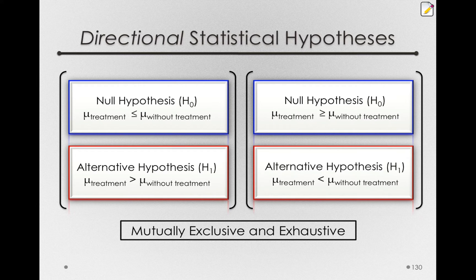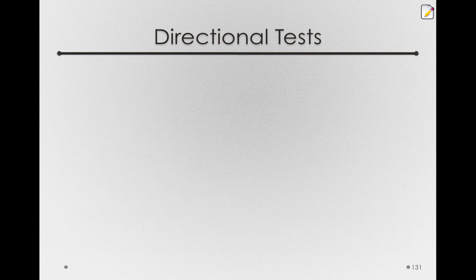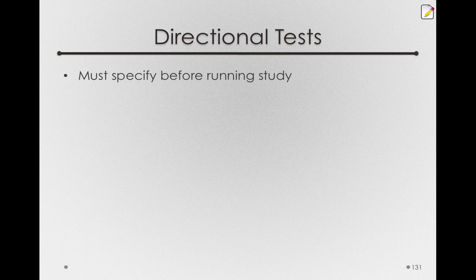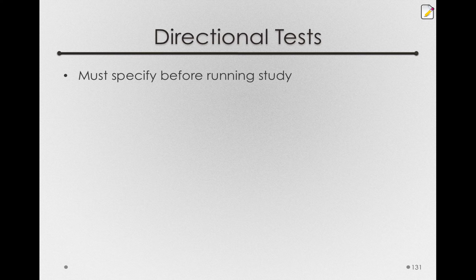Now, you might think, given that we can increase our power without increasing our false alarm rate, that we should always use a directional hypothesis. There are some very good reasons not to use a directional statistical hypothesis — one of them is a fairly statistical point, and the other is a fairly pragmatic point. The first characteristic is that you have to specify them before running a study. This is in part to be ethical, and in part to keep us from inflating our false alarm rate without knowing it.